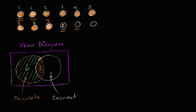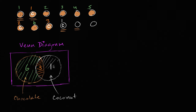How many total have coconut? We'll figure that out now. How many have coconut but no chocolate? There's only one with coconut and no chocolate, and that represents this area shaded in white. So how many total coconut are there? Well, one plus three is four. And you see that: one, two, three, four.